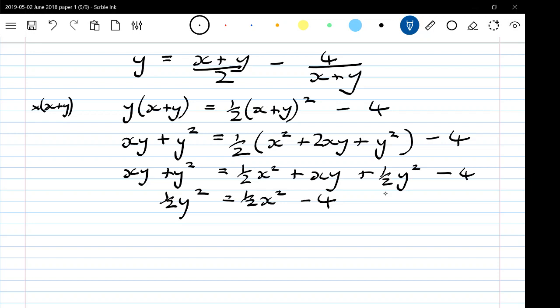What did I ask for? Oh, give your answer in a form not involving fractions or brackets. So I've got fractions, let's double everything. y squared is x squared minus 8. That form is acceptable. Any correct form, maybe x squared minus y squared equals 8 is about the nicest form you can get from that.